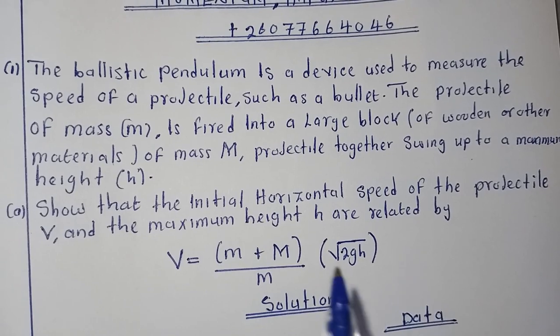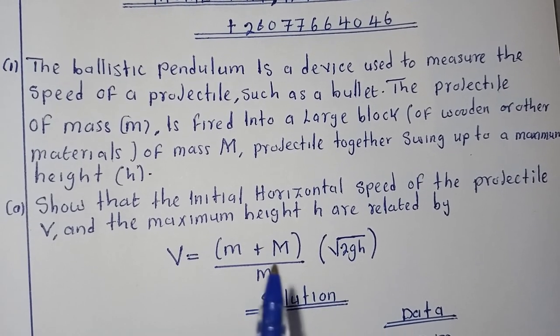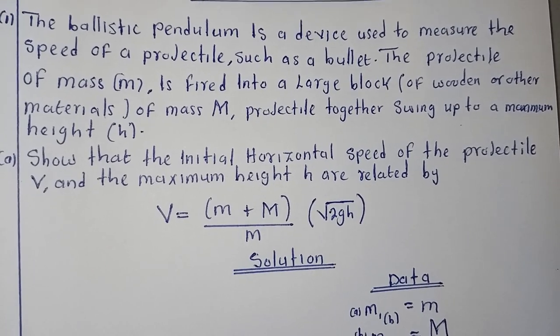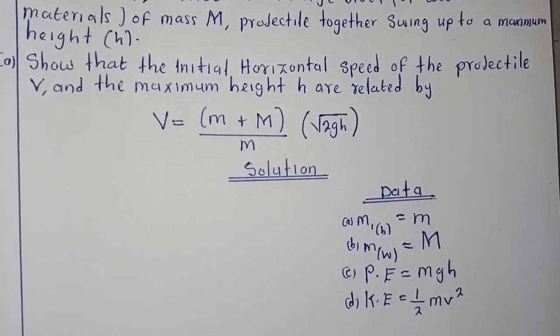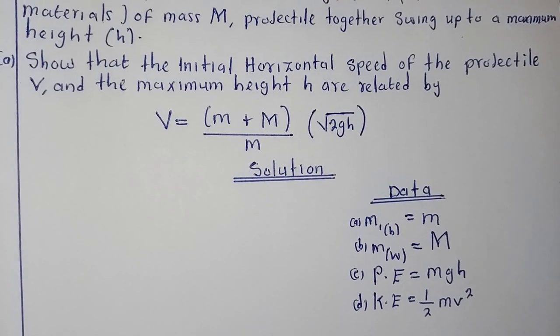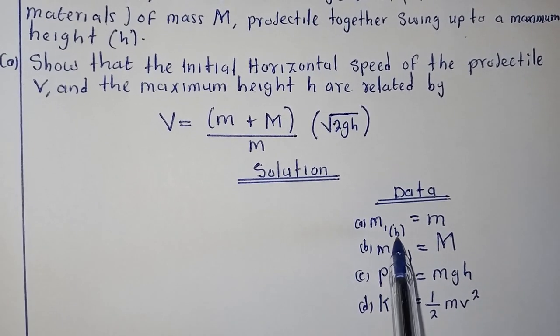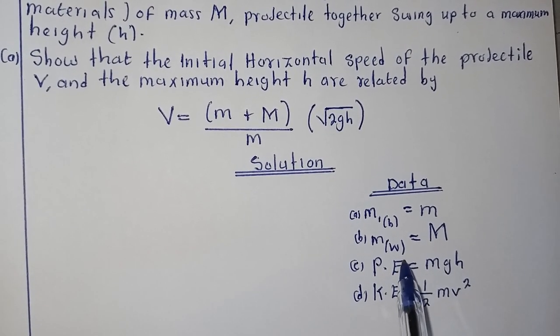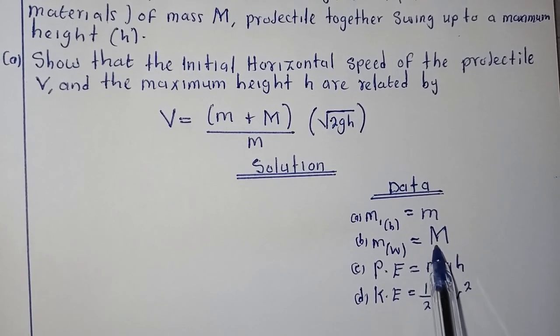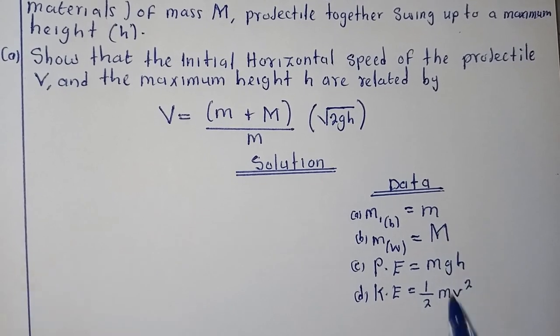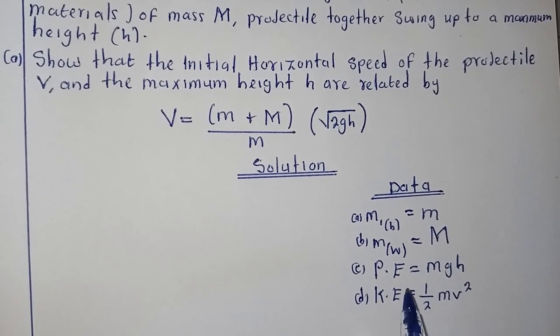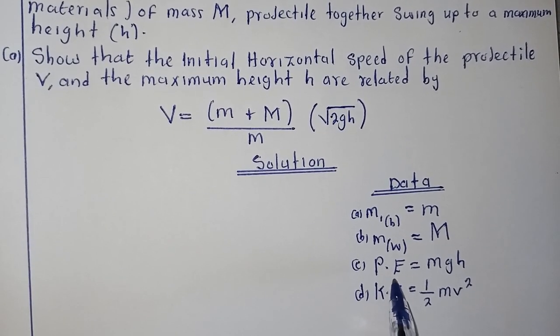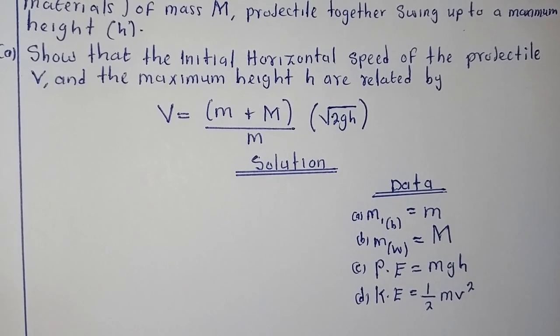What they just want us to do is simply to show the relationship that exists between velocity and height using this formula. I have illustrated already the data. In the question we are given the mass of the bullet as m, and the mass of the material it hits is represented by M. We know that it's a projectile going against gravity, so it has some potential energy, and it's in motion, so it possesses kinetic energy.